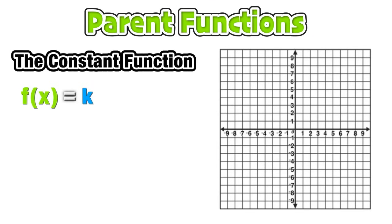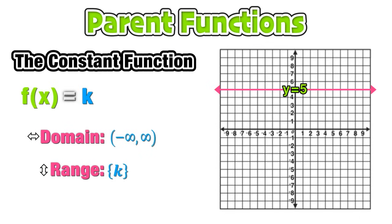We'll start off with the constant function f(x) = k, where k is just some real number, in this case k equals 5 for the equation y = 5, which is a horizontal line. Now the domain for this function is going to be all the values from negative infinity to positive infinity, and the range of this function is just going to be the value k, in this case 5.